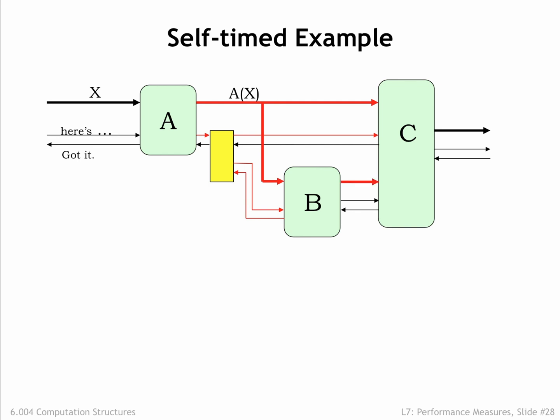After B finishes its computation, it supplies a new value to C and asserts its here's X signal output to let C know that its second input is ready. Now C is happy and signals both upstream stages that it has consumed its two inputs. Now that both got X inputs are asserted, the yellow box asserts A's got X input to let it know that the data has been transferred.